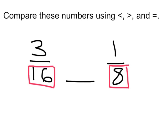So I'm going to leave this one the same, three out of sixteen, and I'm going to multiply this one numerator and denominator by two so that this one becomes two sixteenths. Now hopefully it's obvious that three out of sixteen is larger than two out of sixteen.